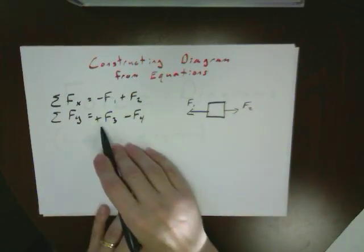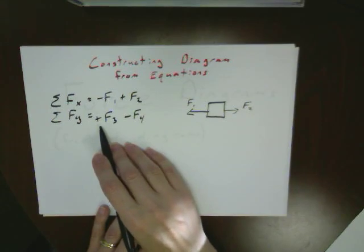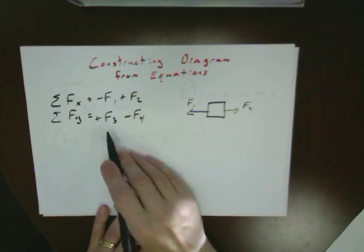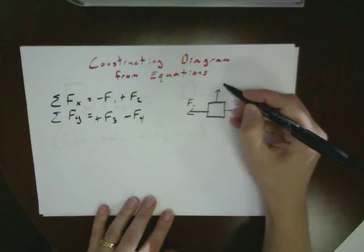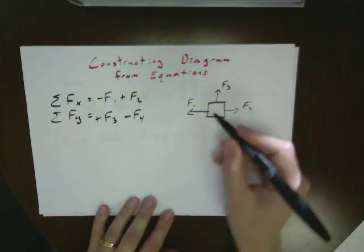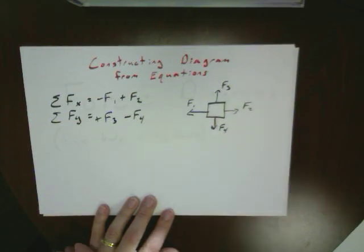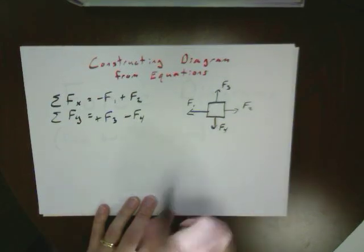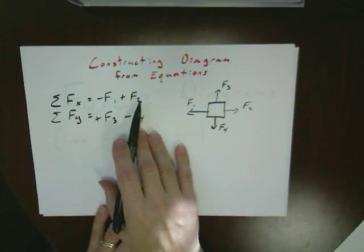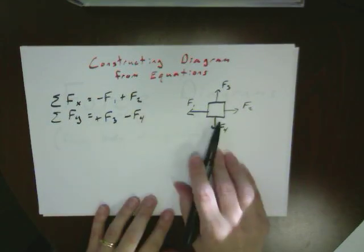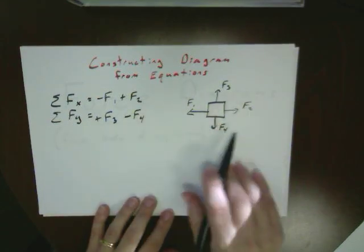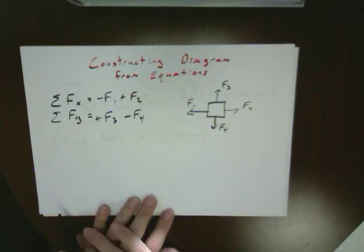From our fy set of equations, that's up and down, we've got plus f3. Plus is going to be in the upwards direction. And negative f4 means that's going to be in the downward direction. So once we've got our equations, we can construct a diagram to visualize which direction all of those forces are in.